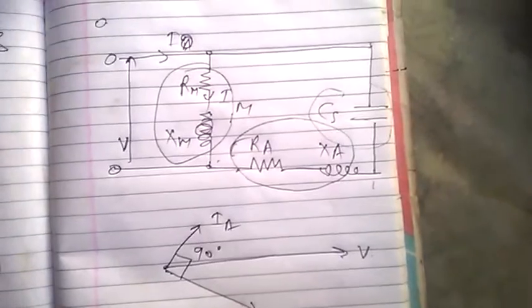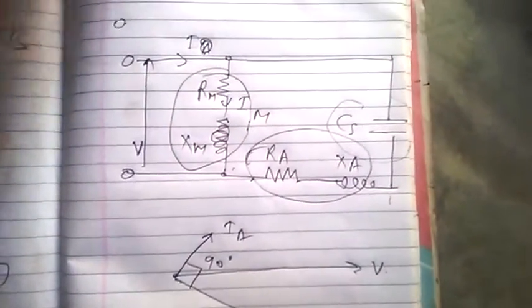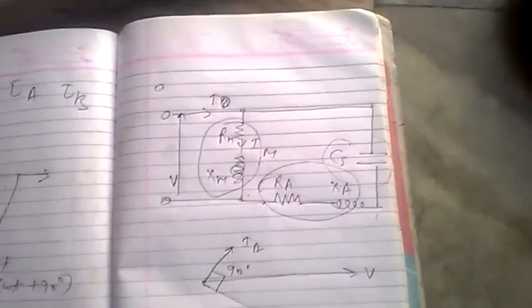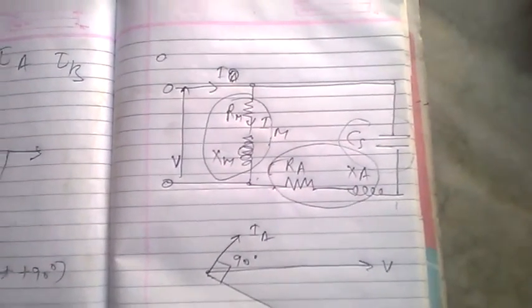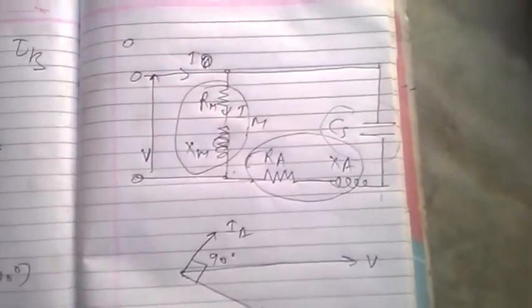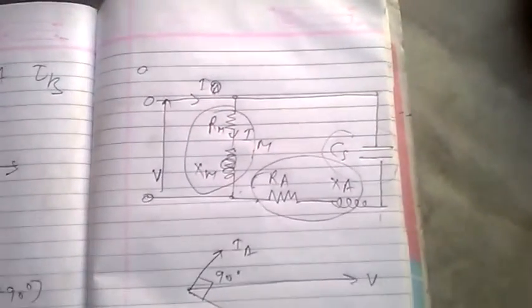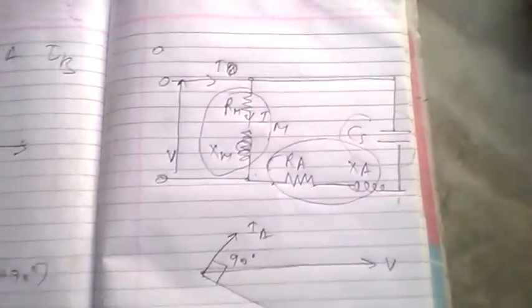The capacitor is permanently connected in circuit, both at starting and running conditions. A permanent split capacitor motor is also called a single value capacitor motor. Consequently it produces uniform torque. The motor is therefore less noisy during operation. So that's the full support of this.